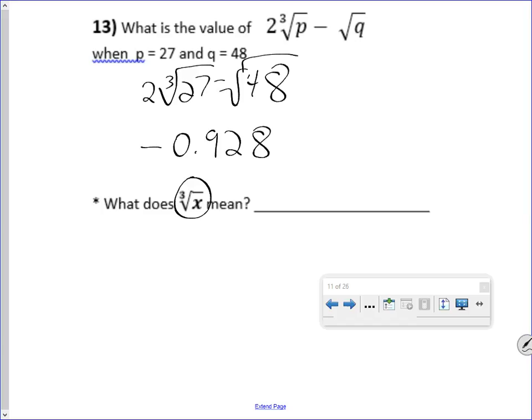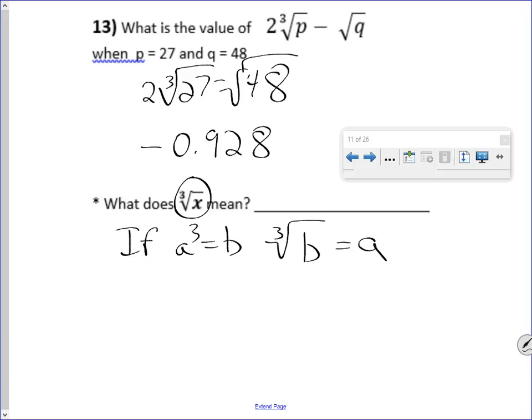What does cube root mean? Well, if A cubed equals B, then the cube root of B equals A. Or another way to put that, think of, let's try some numbers. If 2 cubed equals 8, then the cube root of 8 equals 2.